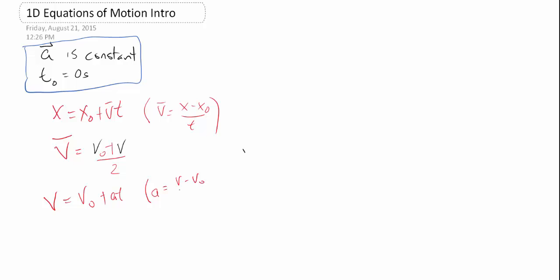You notice the a doesn't have an average over it. We've already said we're assuming our acceleration is constant, so if acceleration is constant then a_average is just a. Acceleration is also a vector - we're just dealing in one dimension so I'm leaving the vector signs off, but once we get to two dimensions we'll think about acceleration and velocity as vectors.